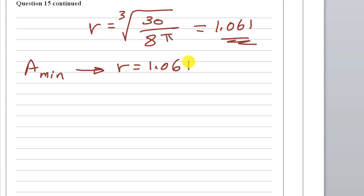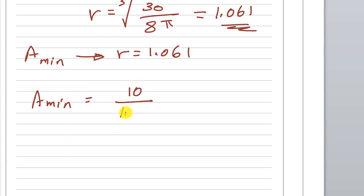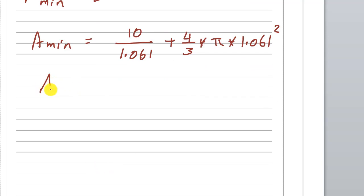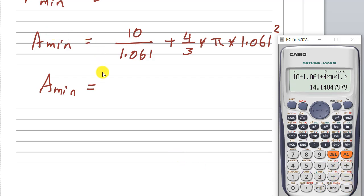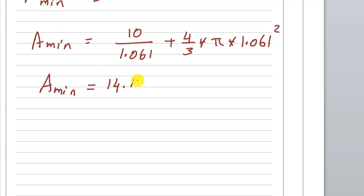The minimum area at r equals 1.061 is: A equals 10/1.061 plus (4/3)π times 1.061 squared, giving a minimum area of approximately 14.14 square metres. This is the minimum surface area.